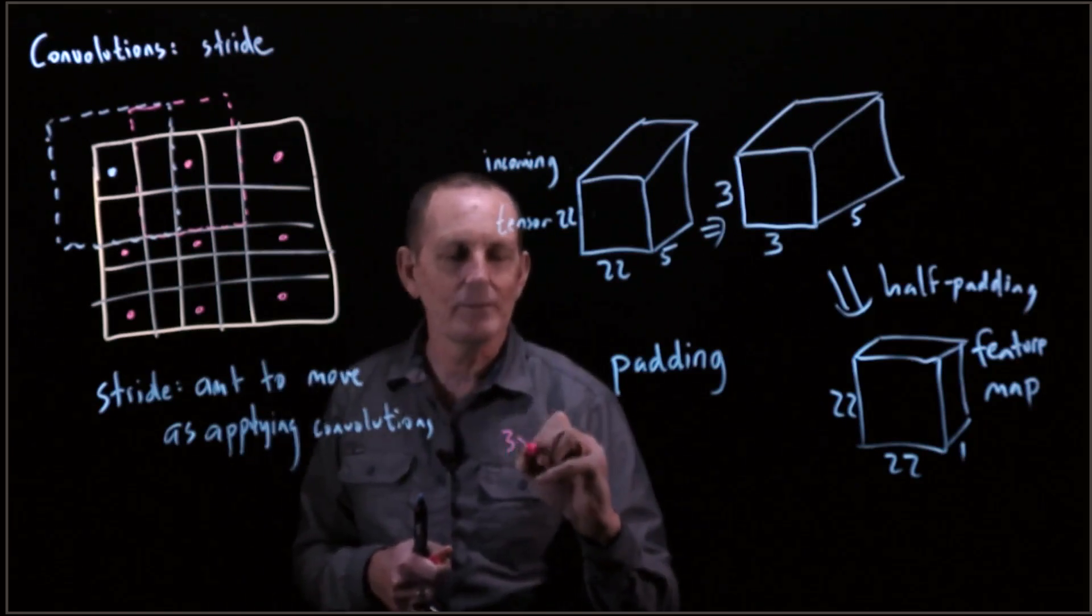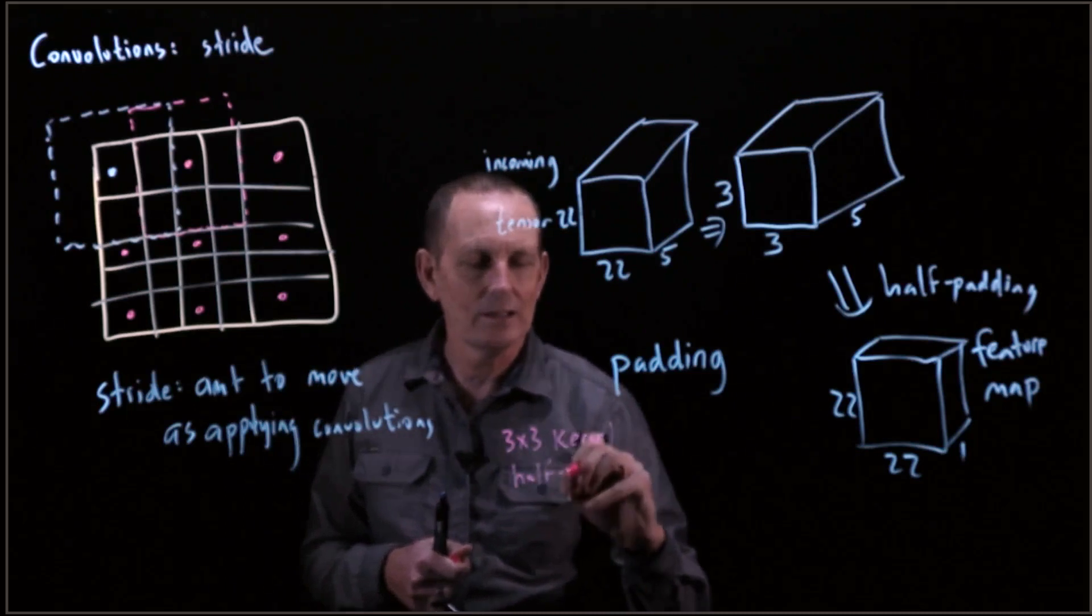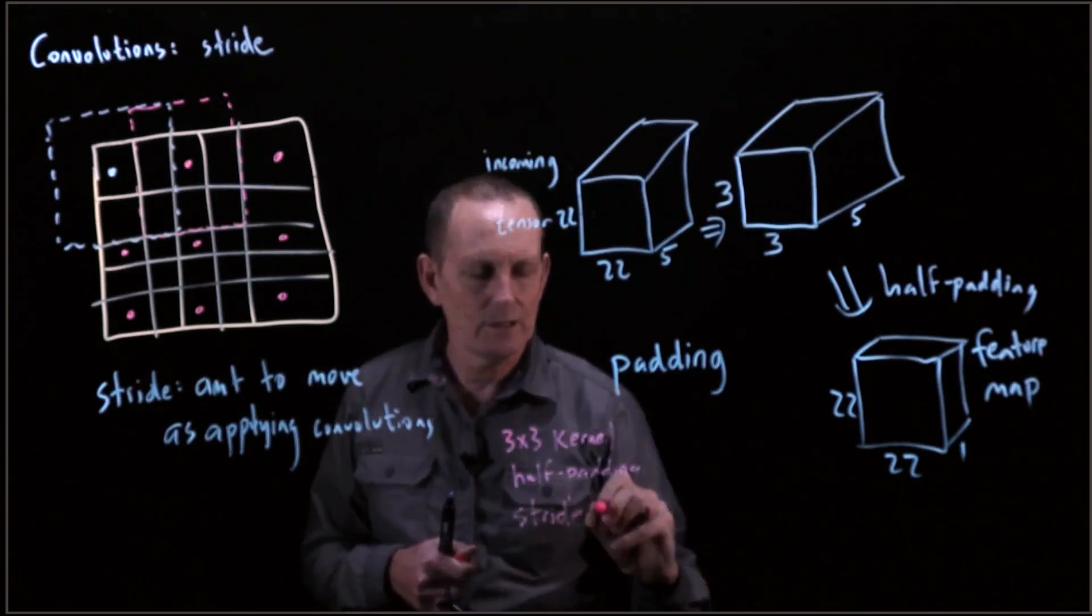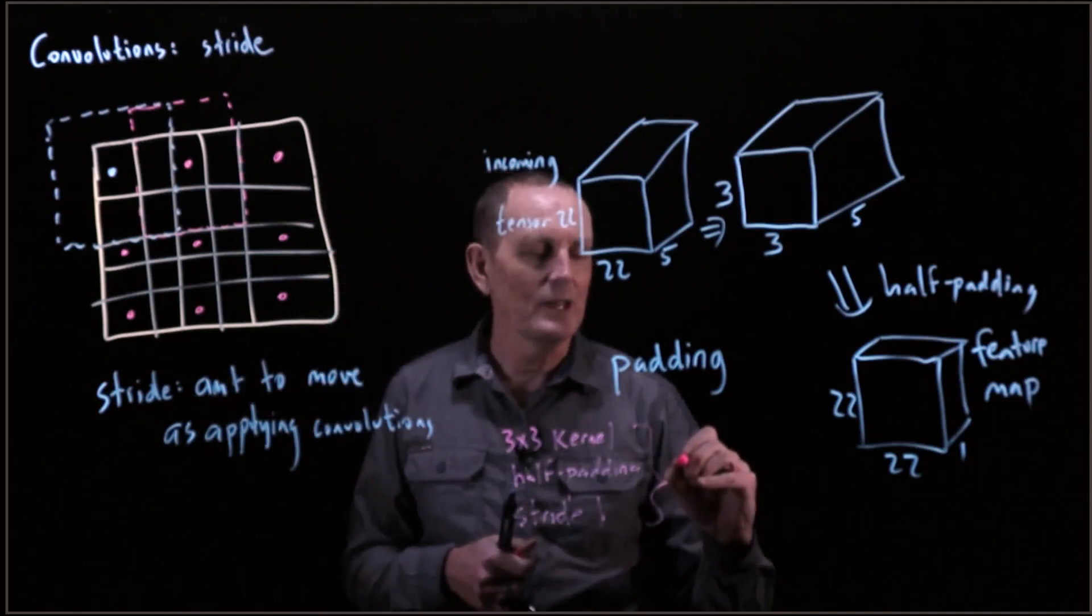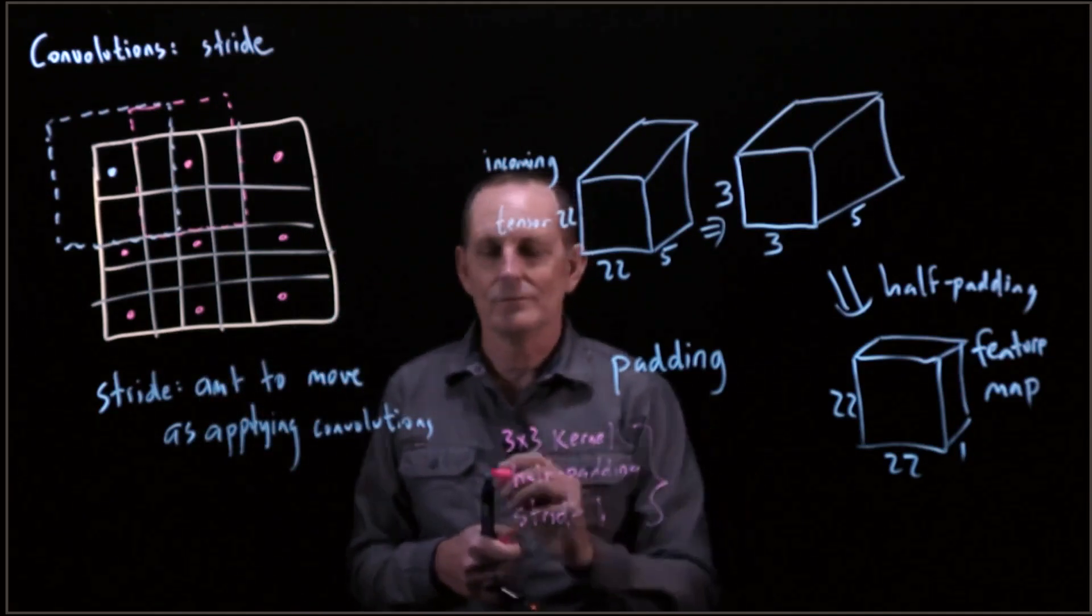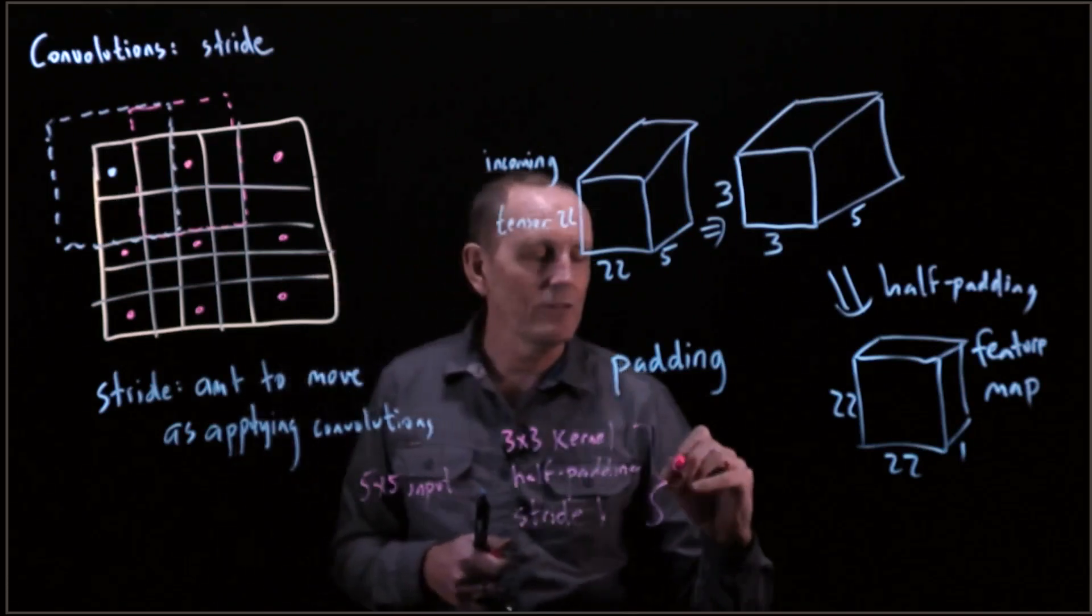We have a 3 by 3 kernel, we have half padding, and we have a stride of 1. This is going to end up with, so let's say we have a 5 by 5 input, this will end up with a 5 by 5 output.